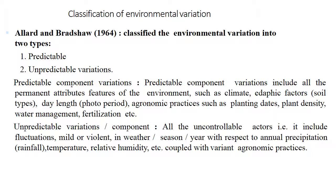Unpredictable variation means all the uncontrollable factors. It includes fluctuations — mild or violent — in weather, season, year, with respect to annual precipitation or rainfall, temperature, relative humidity, etc., coupled with variant agronomic practices.